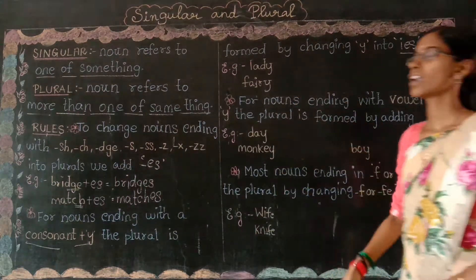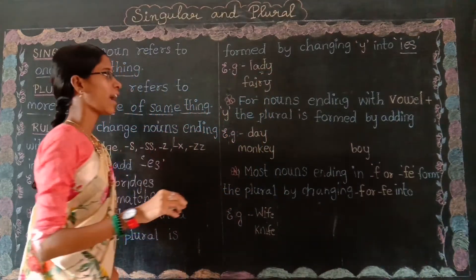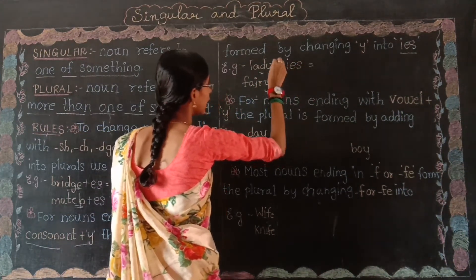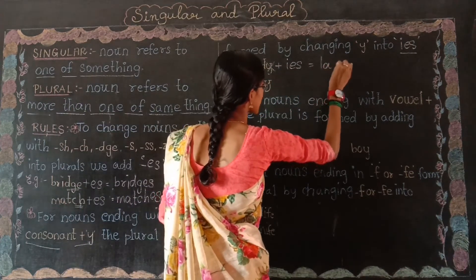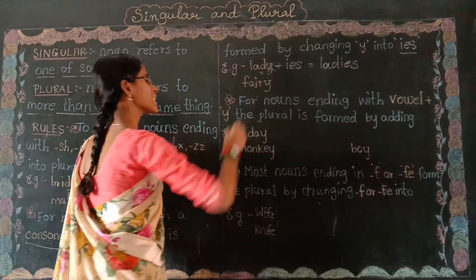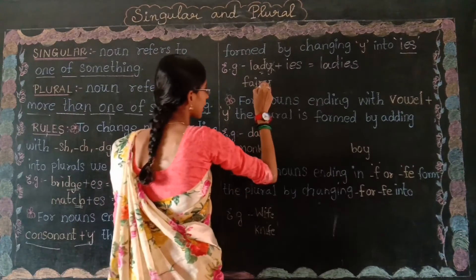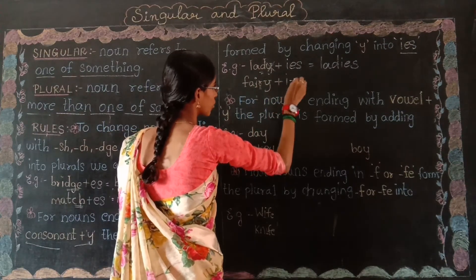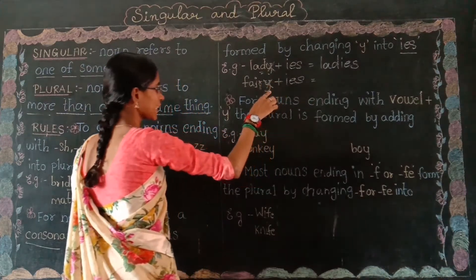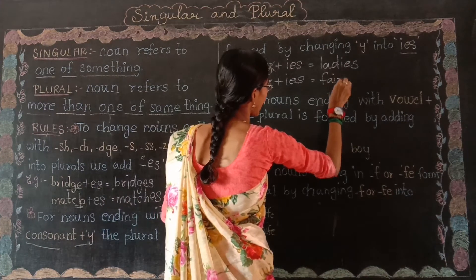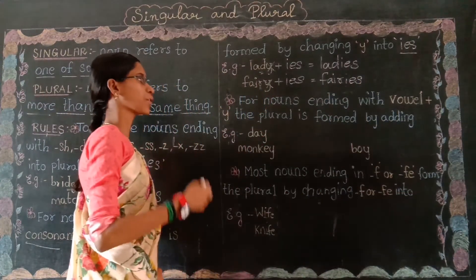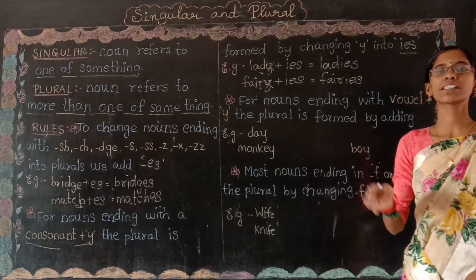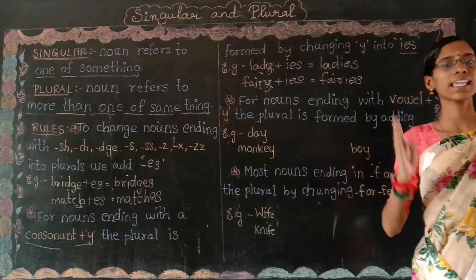See the example: 'lady.' Here D is a consonant, so it is consonant plus Y. You have to add IES — cancel the Y and the answer is 'ladies.' See the second example: 'ferry.' R is a consonant, followed by Y, so consonant plus Y. According to the rule, you cancel Y and add IES. The answer is 'ferries.' So the second rule is: for nouns ending with a consonant plus Y, the plural is formed by changing Y into IES.